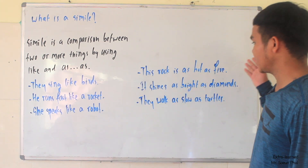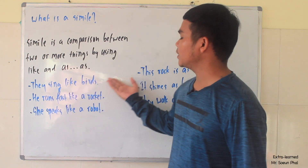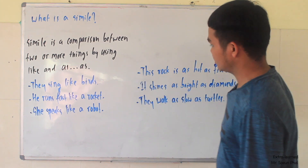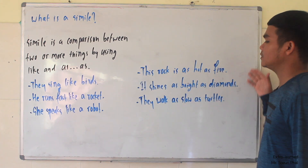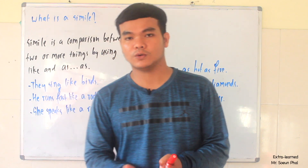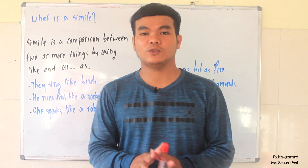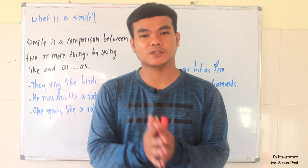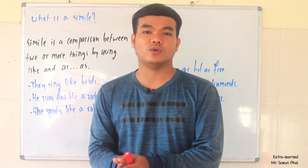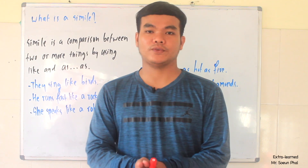So whenever we compare between two or more things by using 'like' and 'as-as', we call it a simile. In the first part, we used 'like' to compare, and in the second part, we used 'as-as' to compare. This is what we covered in this video. I hope you learned something from it. Don't forget to like and subscribe to the YouTube channel to get more videos. Thanks for watching. Bye for now.